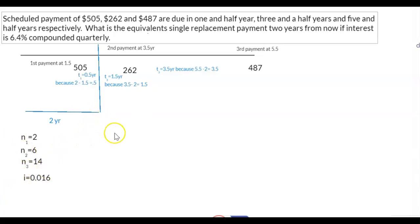As I said before, this money is moving forward. So it's a future value. So future value 1 is equal to PV1 times 1 plus i to the power of n. Now, our first present value is 505.